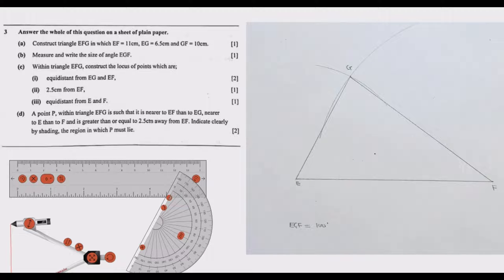To answer part A, we need three important instruments: a ruler, a protractor, and a compass. The first step is to find and draw the first side we've been given, which is EF.